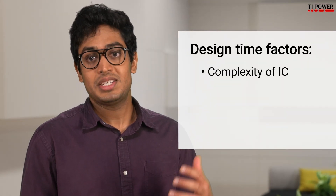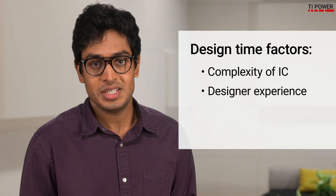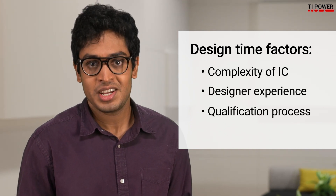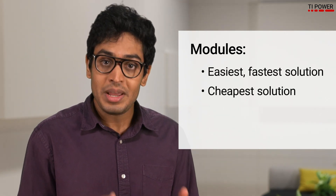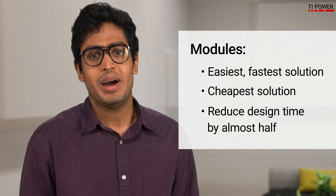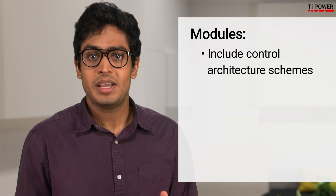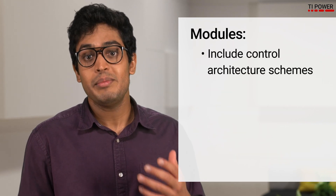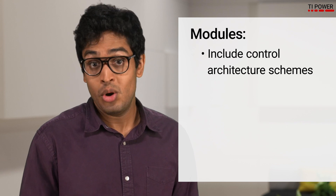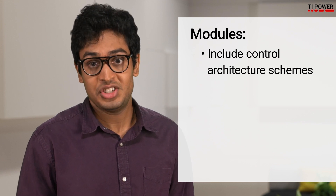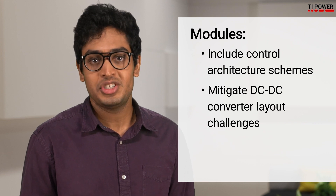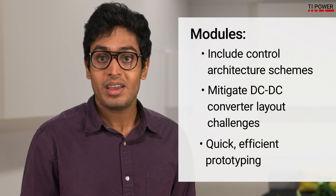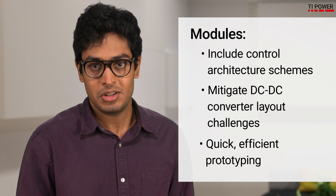Calculating design time depends on a variety of factors, like the complexity of the IC, experience of the designer, and qualification process. A module is usually the easiest, fastest solution, and thus the cheapest, as they reduce design time by almost half. This is because the designer doesn't necessarily need to be involved with the control architecture scheme. There is no inductor selection, qualification, and sourcing needed. A lot of the DC-DC converter layout challenges are mitigated, and prototyping can be quick and efficient due to the simplicity of the solution.